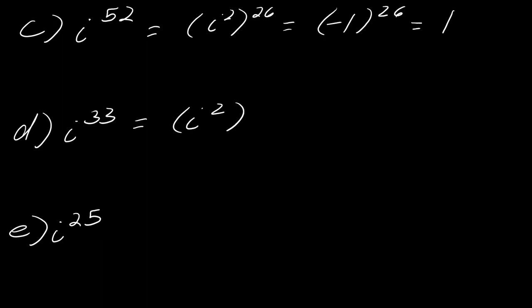So let's do that again now for i to the 33rd. How many times will 2 evenly go into 33? It will evenly go in 16 times with a remainder of 1. So i squared is negative 1. If I take that to the 16th, that will be positive. So this whole thing will just equal i. And one more time for i to the 25. How many times will 2 evenly go into 25? It will evenly go in 12 times with a remainder of 1. So this ends up being negative 1 to the 12th times i. And once again, this equals i.